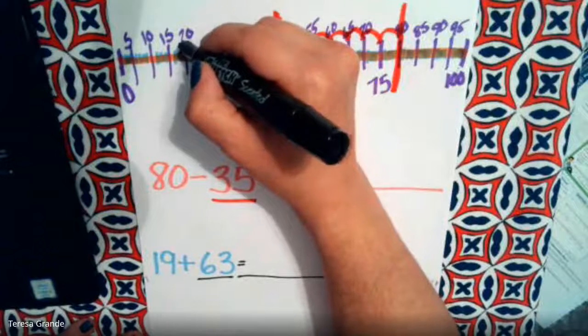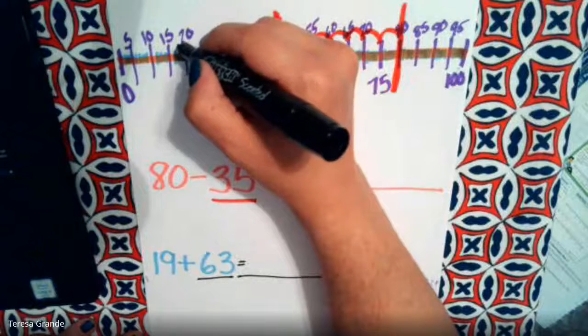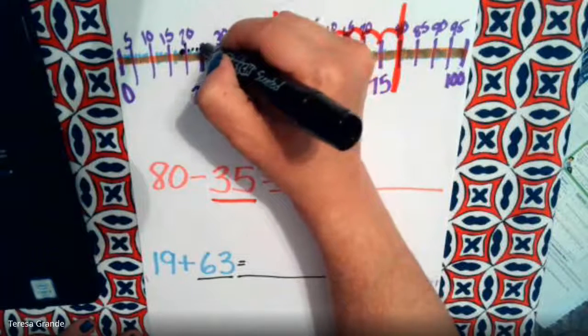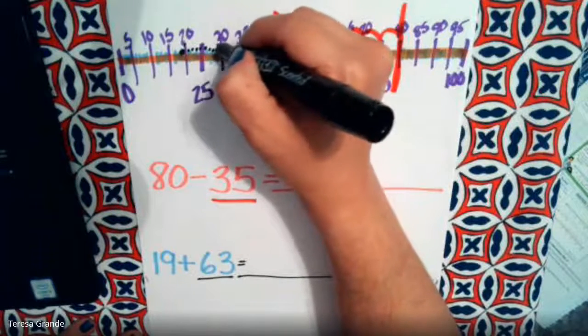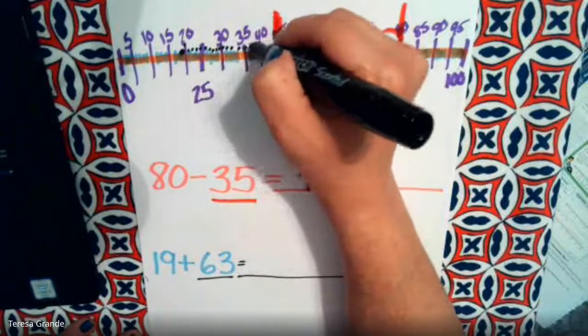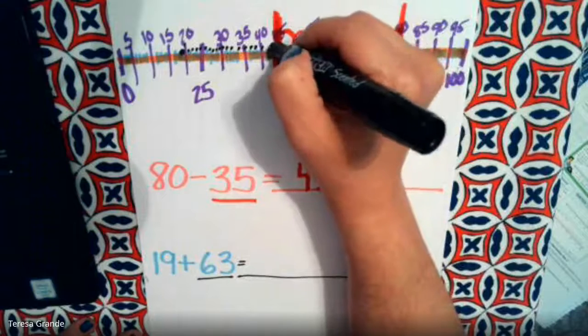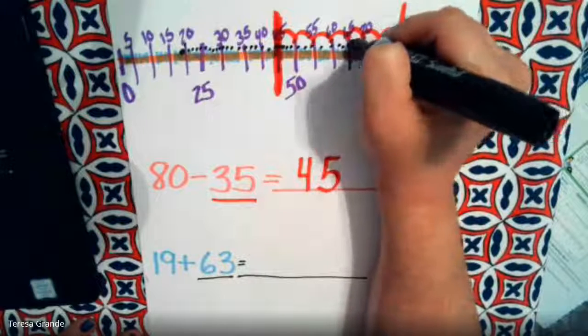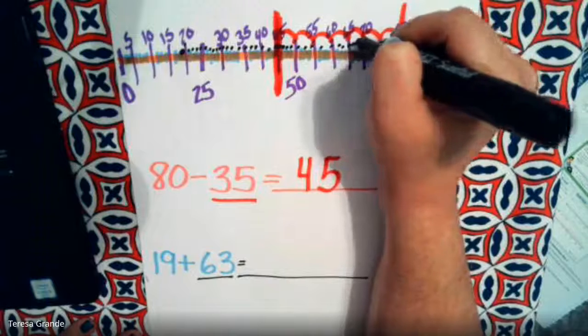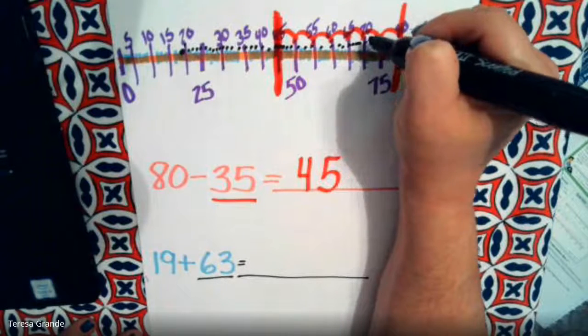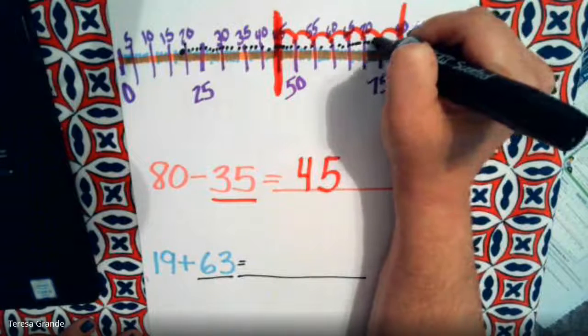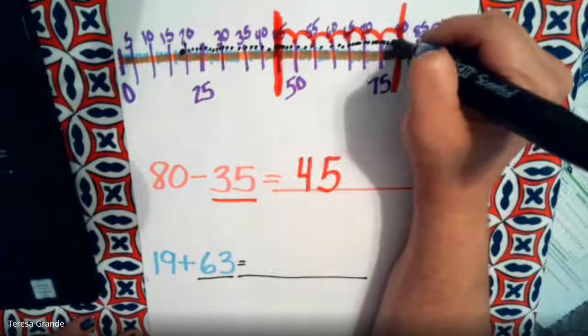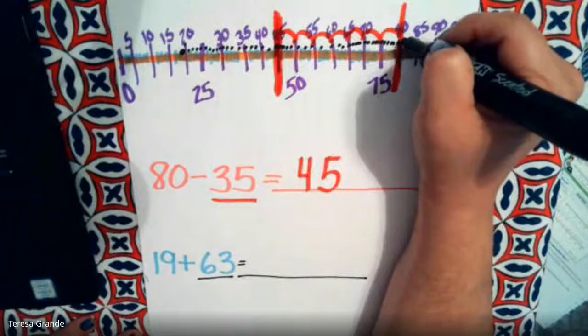So if we're going to go to 20, we're going to start at 19 and go 19, 20, 21, 22, 23, 24, 25, 26, 27, 28, 29, 30 and keep on counting. We're going to keep counting 65, 66, 67, 68, 69, 70, 71, 72, 73, 74, 75, 76, 77, 78, 79, here's 80, 81.